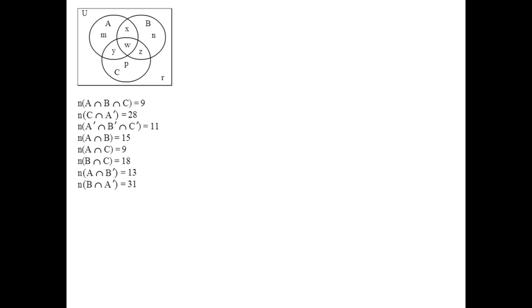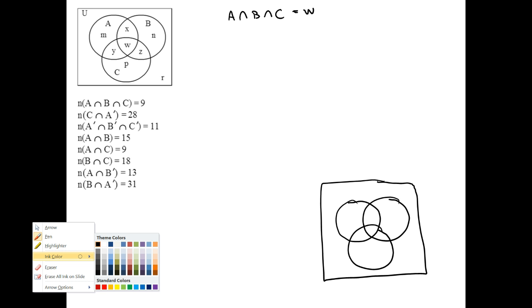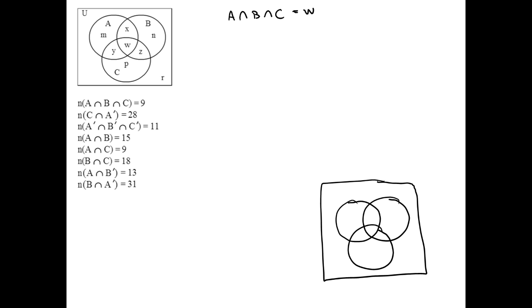What we do is take the information as it comes, and for each piece of information, say which regions that information is talking about. First up we have A intersect B intersect C. That is the intersection between all three sets. That's this region in the middle, that is W. So we can say that W is equal to 9. In the bottom corner here, I'll redraw the Venn diagram, and I'll be putting the numbers inside as we get them. This one's straightforward, we should put a 9 inside region W.